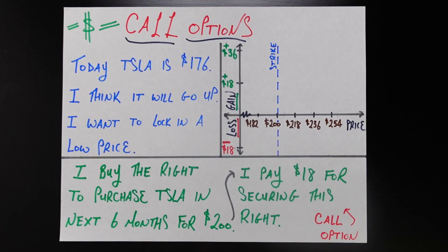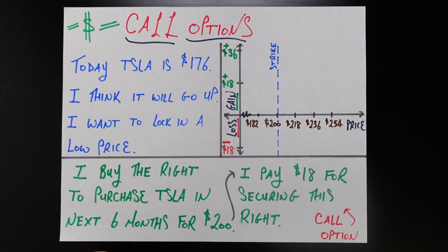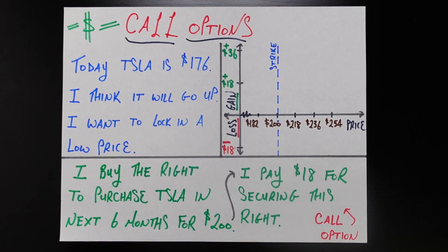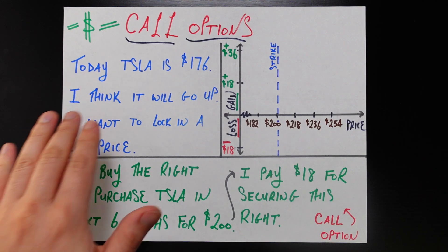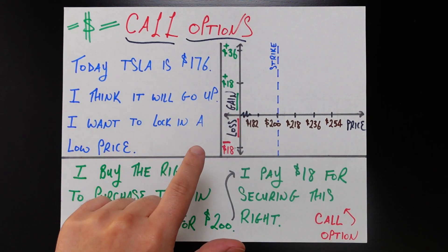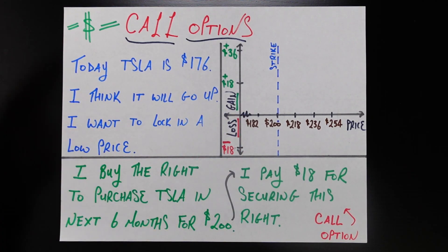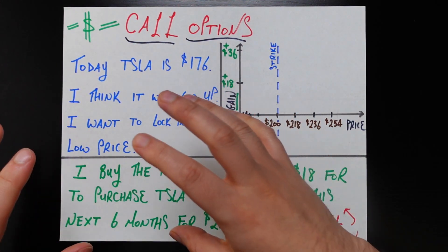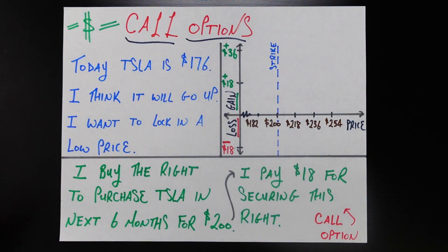Today Tesla stock is $176. If I want to buy a share I'm going to pay $176. Let's say I think in the future the value of the stock is going to go up, and what I want to do today based on my belief is lock in a low price to buy Tesla stock in the future. So in the language of options, I want the option to buy Tesla stock for cheap at some point in the future, and so what I do is I buy a call option. The entirety of what a call option is is explained in the green text at the bottom of this page.